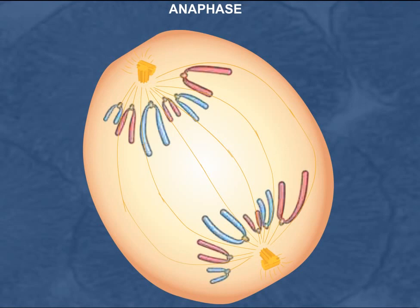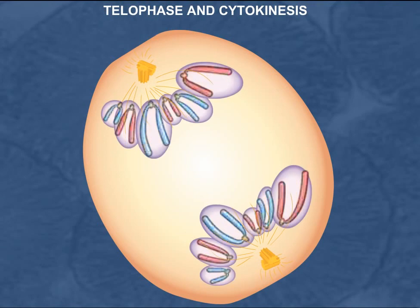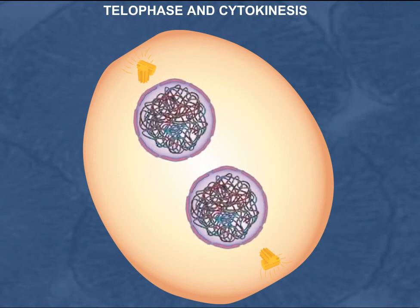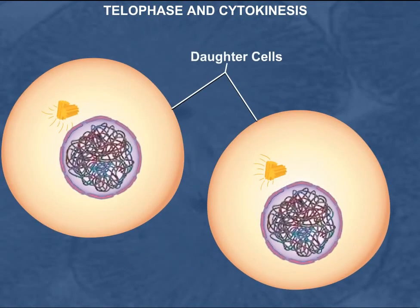Each daughter cell will receive the same complement of chromosomes as was originally found in the mother cell, thus assuring that each daughter cell gets an identical copy of genetic information. During telophase, the chromosomes decondense and most of the microtubules depolymerize. Portions of nuclear membranes surround each individual chromosome, creating vesicles, which fuse to create a nucleus containing all of the chromosomes at one pole of the cell. In animal cells, cytokinesis involves the formation of a cleavage furrow; the plasma membrane constricts and eventually separates the cell into two daughter cells. The daughter cells then enter interphase where growth and enlargement occurs, leading to either preparation for another mitosis or differentiation and specialization.